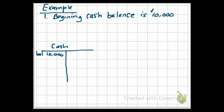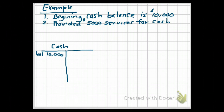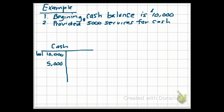The next transaction is that we provided $5,000 of services for cash. This is a transaction — it has a financial impact on the business and it's measurable. We received $5,000 in cash. Cash is an asset, therefore our cash increased by $5,000. Since increases go on the same side as the normal balance, we would debit $5,000 to our cash account. Every transaction must have an equal and opposite reaction — both sides have to be equal but opposite — because we are impacting our accounting equation.